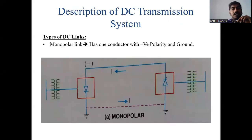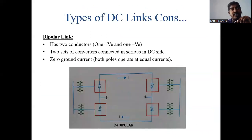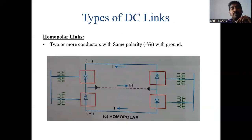The types of DC links are: monopolar link, bipolar link, and homopolar link. In a monopolar link, one conductor (the negative conductor) is grounded. In a bipolar link, there are two conductors — positive and negative — with two sets of converters connected in series on the DC side, with the negative side grounded. In a homopolar link, two or more conductors share the same polarity (negative), with the return path through ground.